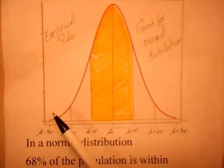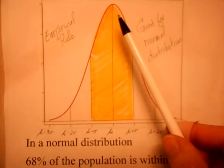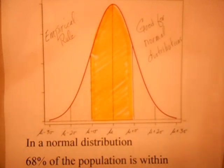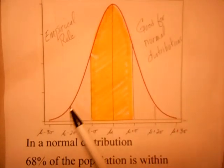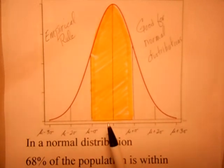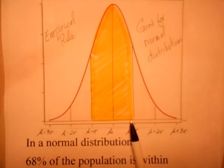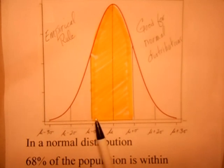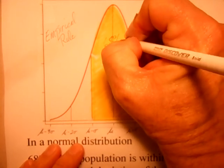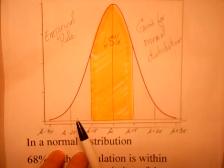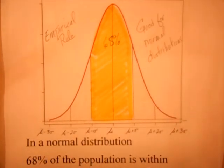The empirical rule talks about a normal distribution. A normal distribution is a very special one — it has a particular shape and shows up often, so it's quite powerful. The empirical rule says that if you have a normal or nearly normal distribution and you know the mean, then within one standard deviation of the mean — that's the mean plus or minus one standard deviation — you're going to have 68% of the population.